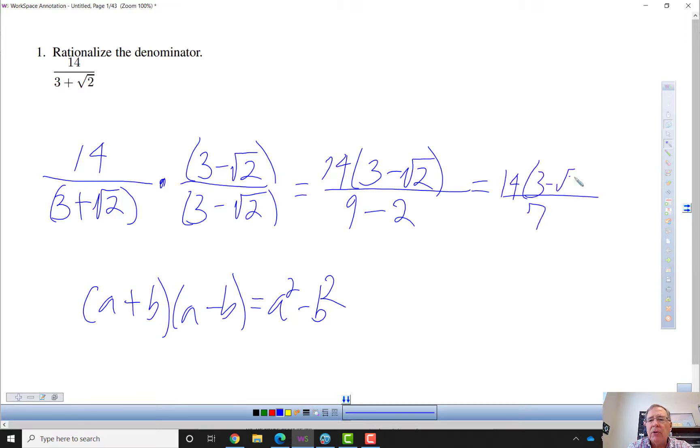3 minus the square root of 2. So this cancels to a 2. So it's 2 times 3 minus the square root of 2.